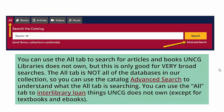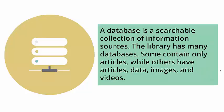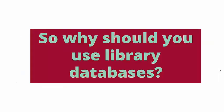You can use the all tab to interlibrary loan things UNCG does not own, except for textbooks and some ebooks. A database is a searchable collection of information sources. The library has many databases. Some contain only articles, while others may have articles, data, images, videos, and more.